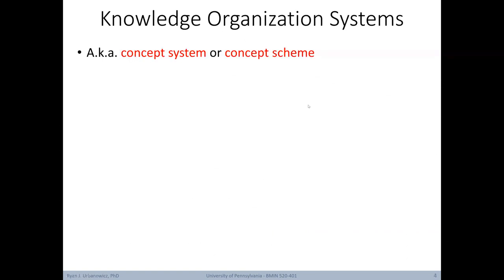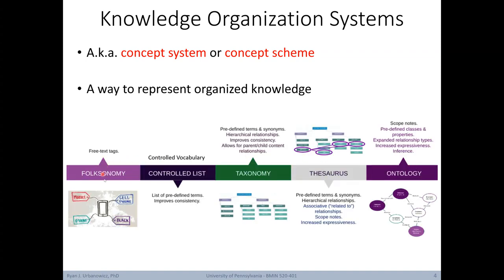Let's start by looking at the broader concept of a knowledge organization system. These are also known as concept systems or concept schemes. A knowledge organization system is basically a way to represent organized knowledge. Here we see a handful of knowledge organization systems, laid out from simplest and least formal to more complex and more formally defined. Here we have a folksonomy, a controlled list, a taxonomy, a thesaurus, and an ontology.